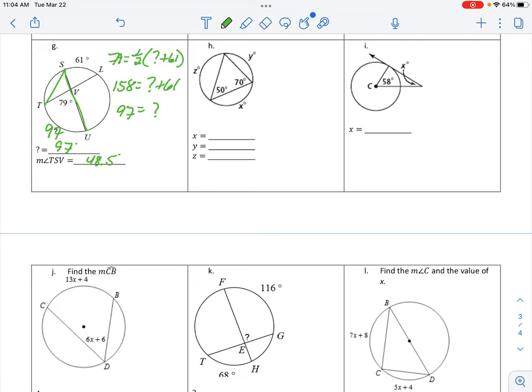Letter H. 50 double gives me Y, 100 degrees. 70 double gives me Z, 140. And X is 360 minus 140 minus 100, 120 degrees.